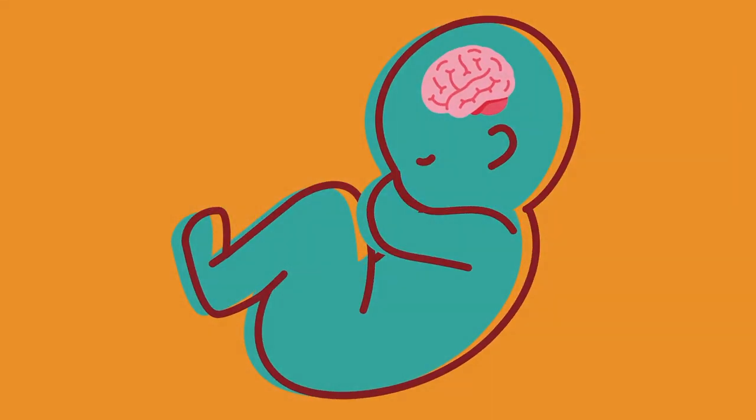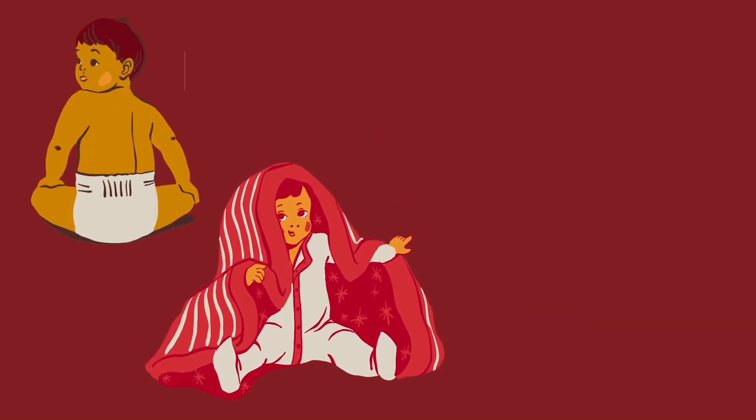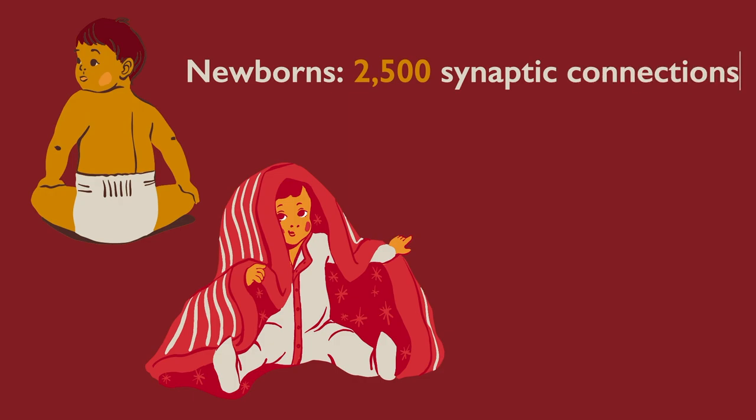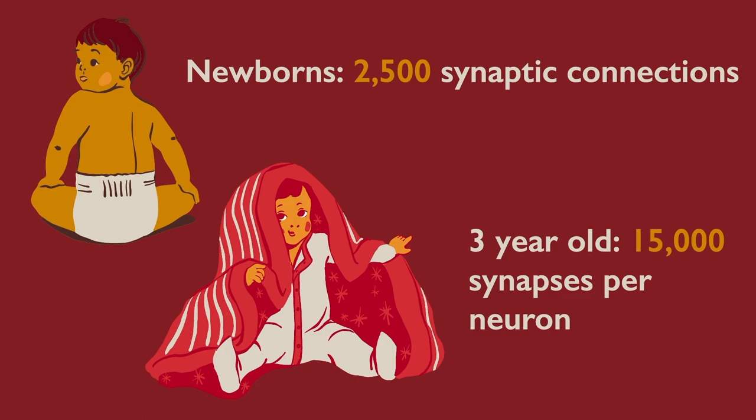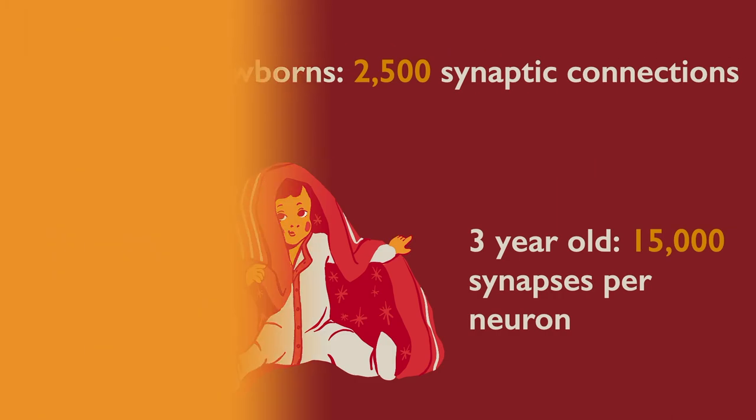The brain of a newborn baby is still very much in development. Newborns have around 2,500 synaptic connections. By the age of three, this number has grown to a whopping 15,000 synapses per neuron. To give you context, adult brains only have half of this amount.